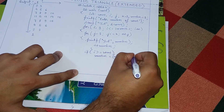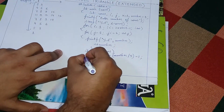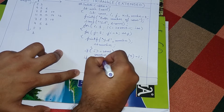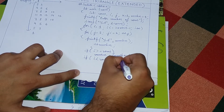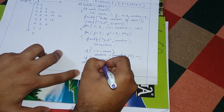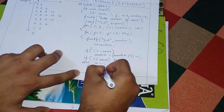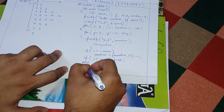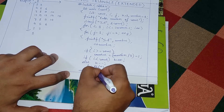Then: if i is less than rows, do k plus plus; else do k minus minus. At the end we write printf backslash n to move to the next line. We close the i-loop, write return zero, and close main.